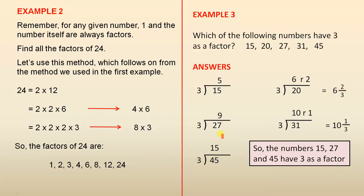Example 2. Remember, for any given number, 1 and the number itself are always factors. Find all the factors of 24. Let's use this method, which follows on from the method we used in the first example. We know that 24 equals 2 times 12.